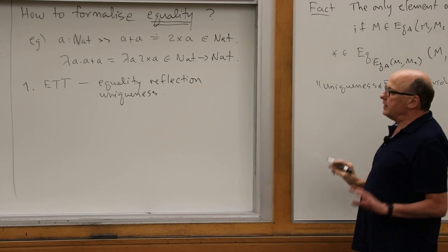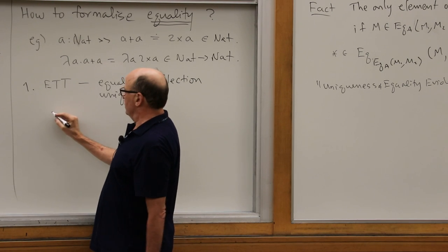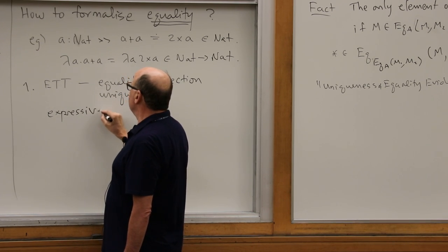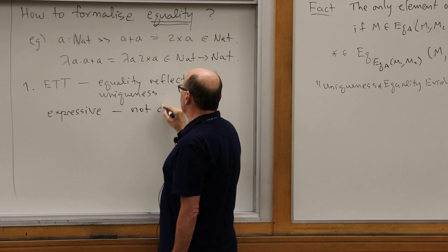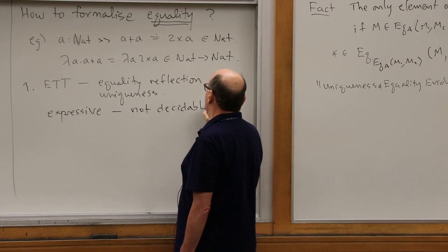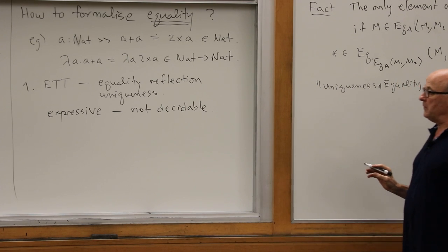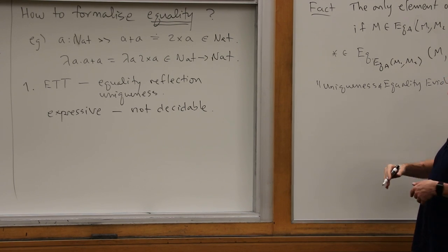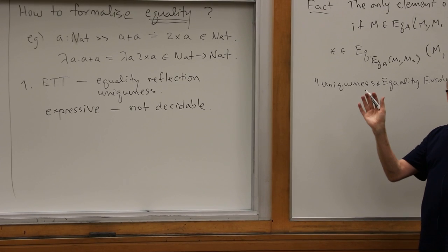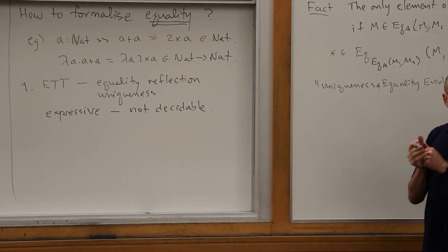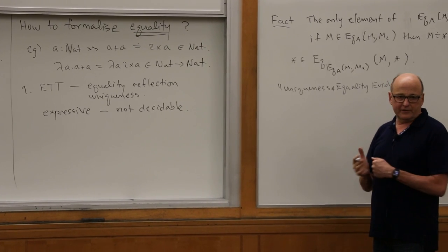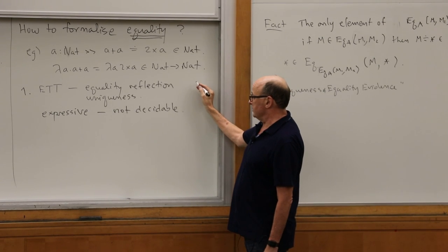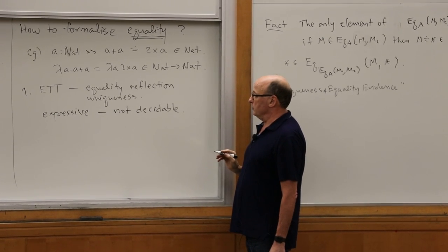ETT has many virtues — it's expressive and gives you a nice way of reasoning about equality. But it's not going to be decidable for anything sufficiently rich. You will not be able to decide type checking. One trade-off is to say: if all I care about is the thing that provides access to the truth, any port in a storm — do whatever you want. As long as it gives me true things, I'm good. I think this is a defensible position.